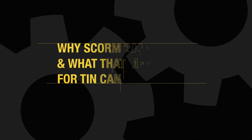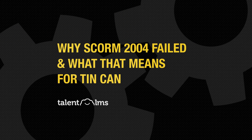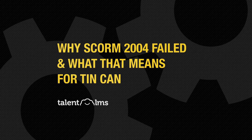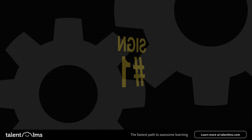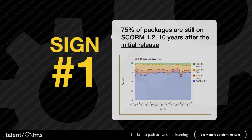Why SCORM 2004 Failed and What That Means for xAPI (TinCan), by TalentLMS. Sign number 1: 75% of packages are still on SCORM 1.2, ten years after the initial release.